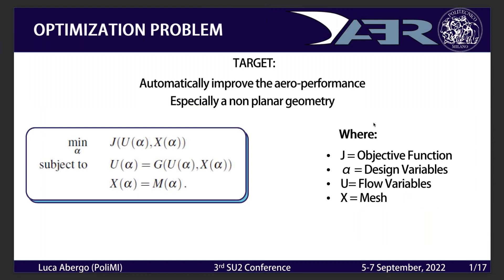The target is to automatically improve the performance of a certain object. We want to extend the capability of SU2 to optimize, especially treating non-planar geometries. Mathematically, this means solving a minimization problem where we select a certain objective function J — usually it is an aerodynamic coefficient — and we impose some constraints.